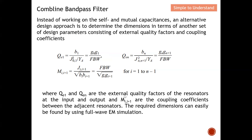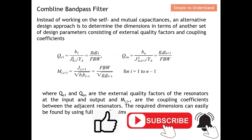Qe1 and Qen are the external quality factors of the resonator at the input and output respectively. Mi,i+1 are the internal coupling coefficients between adjacent resonators. Since it consists of an array of resonators, all the M values describe coupling coefficients between adjacent resonators, and we need the help of an EM simulator to obtain these. I will put the relevant video link in the description.